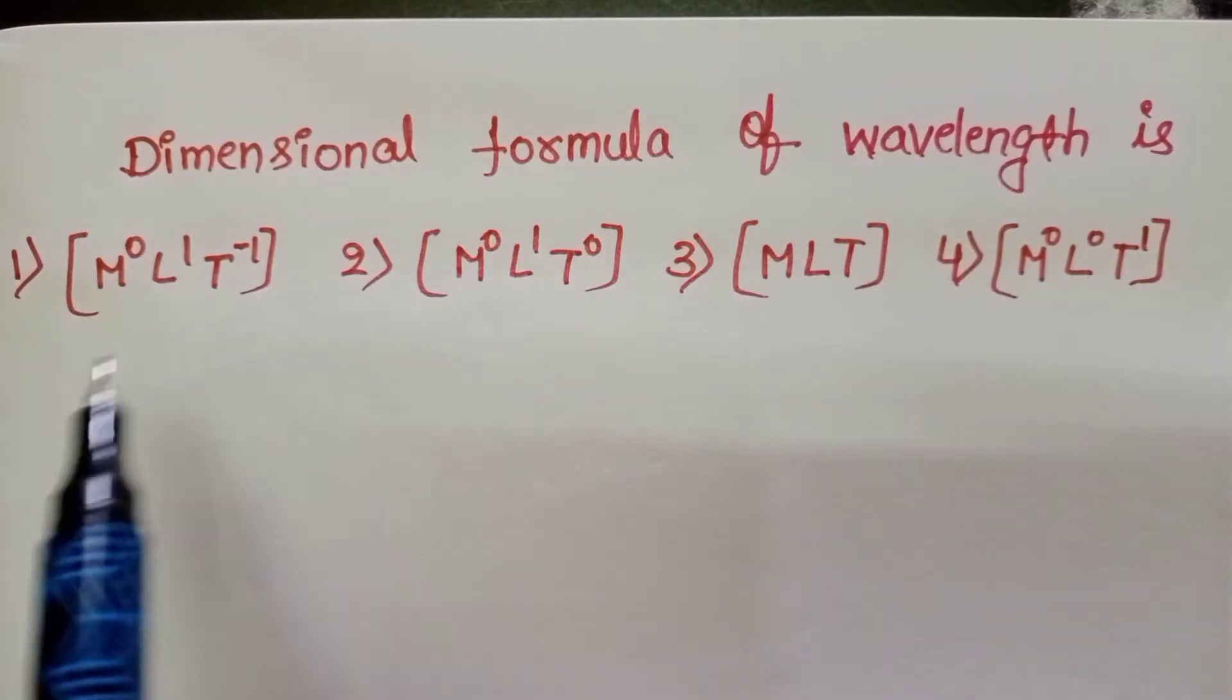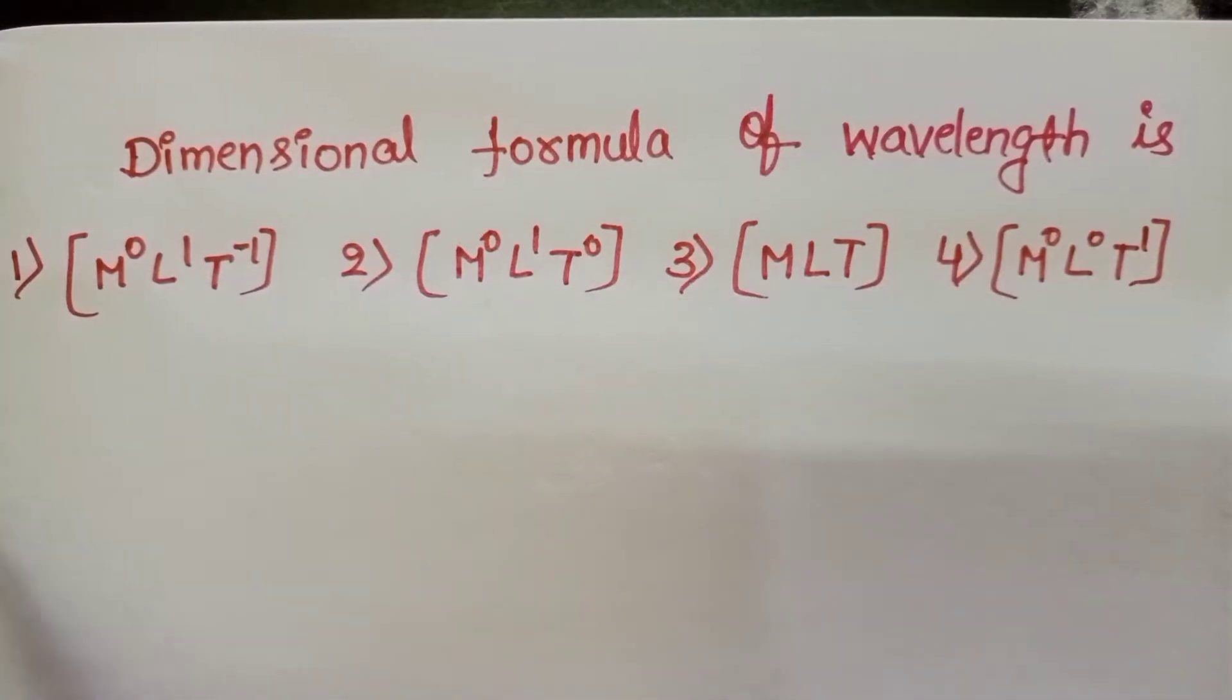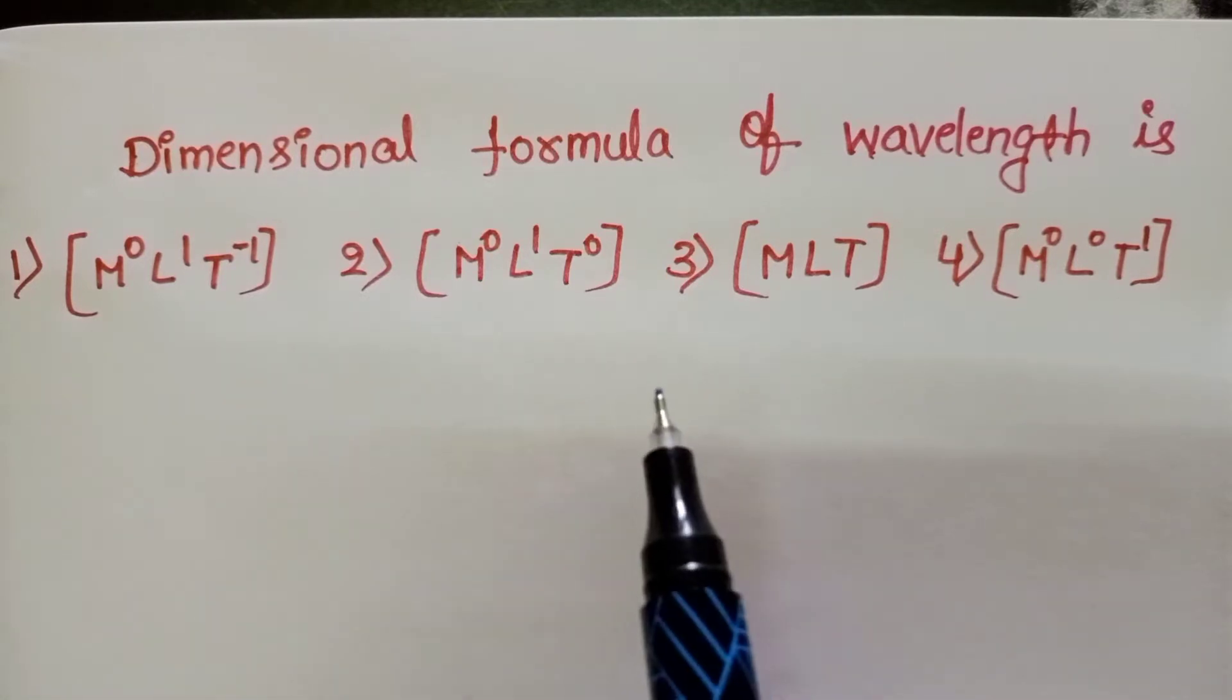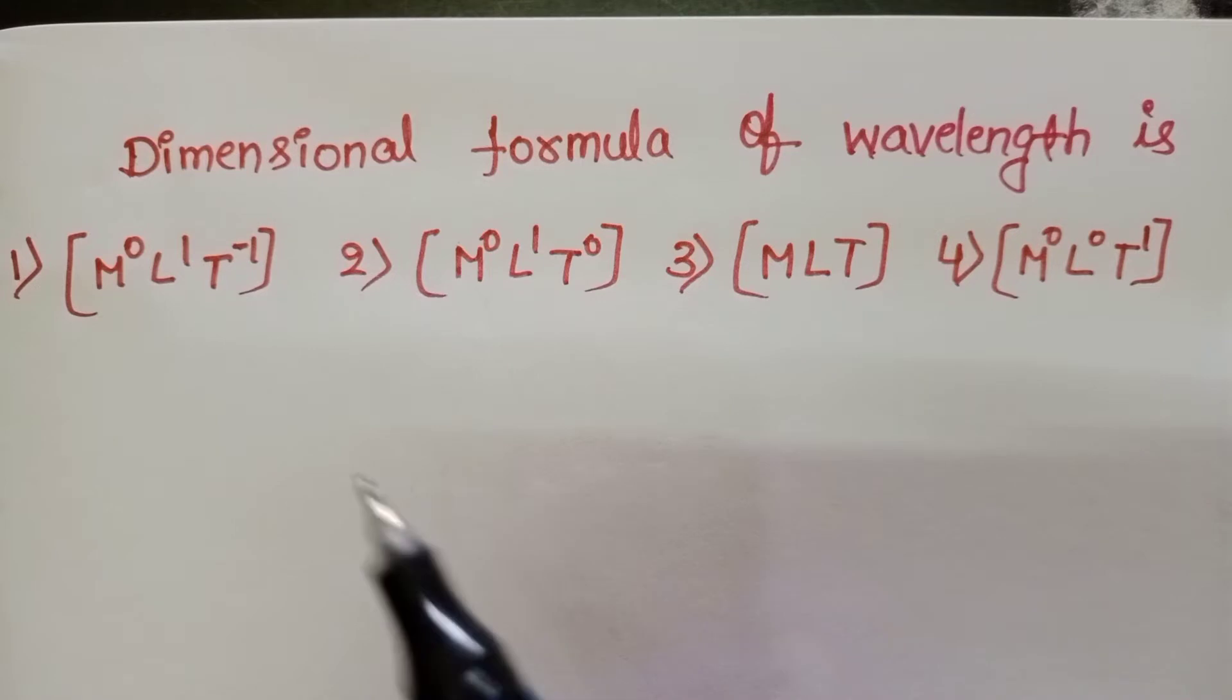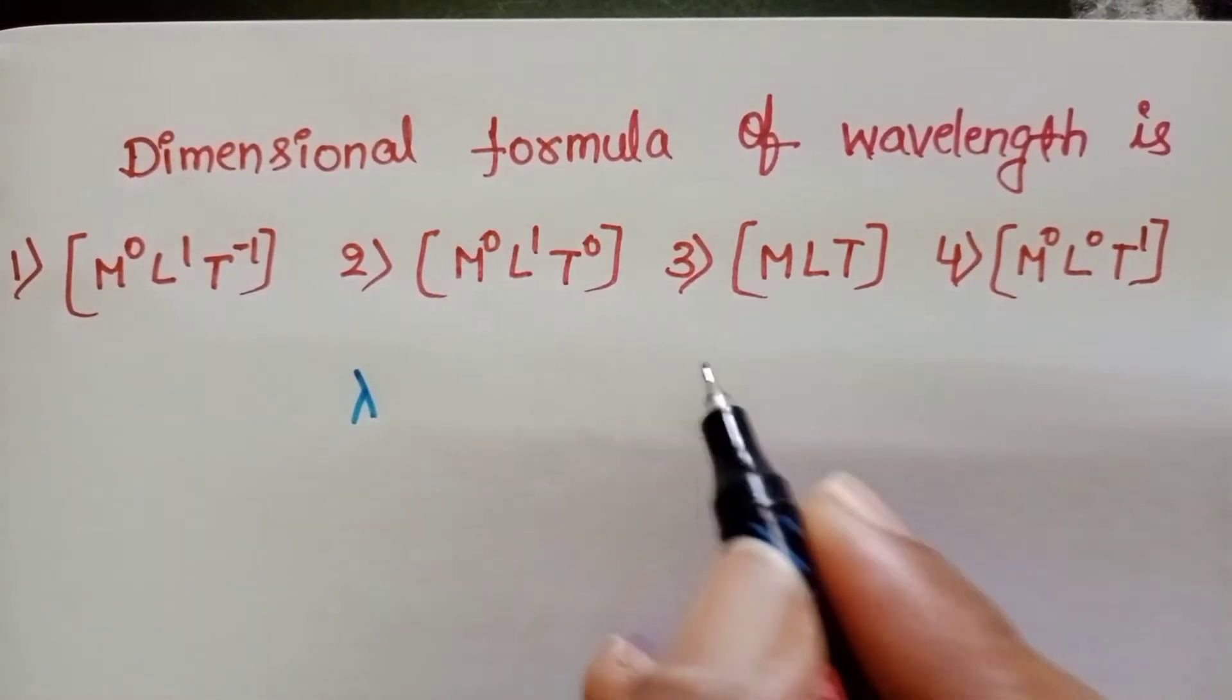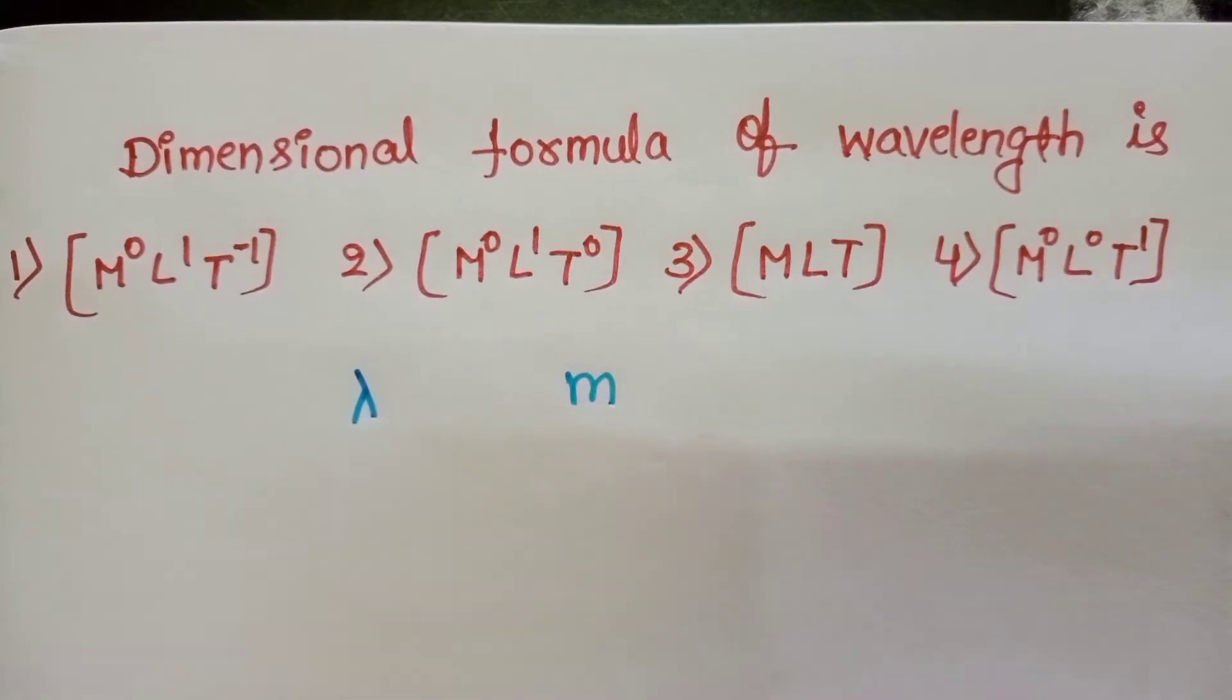Dimensional formula of wavelength is: Generally, we can write the dimensional formula either by using its formula or unit. Wavelength is denoted with letter lambda, and the SI unit of wavelength is meter.